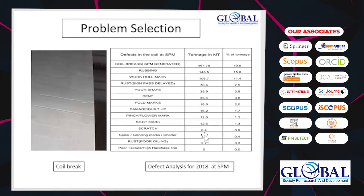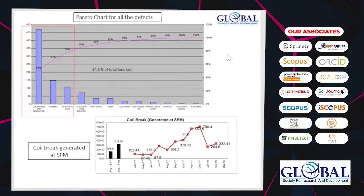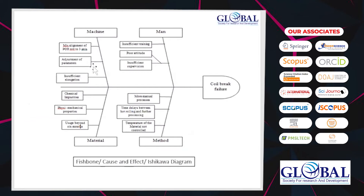In the skin pass mill, this is a table of all the defects. You can see the horizontal lines present — this is a defect due to microstructural properties. We have plotted all the defects on a Pareto chart. According to the 80/20 Pareto formula, we have selected the first three defects which account for about 84.5% of total tons lost. Coil breaks alone take up to 50% of the whole defect tonnage, and we have plotted coil breaks in a yearly data graph.